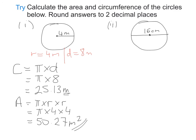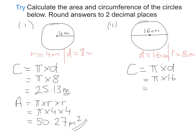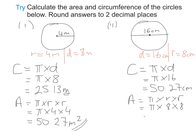For circle number two, the diameter equals 16, so the radius is 8. For the circumference: C = π × d = π × 16, which gives 50.27 centimetres. For the area: A = π × r × r, and since r = 8 centimetres, that gives 201.06 centimetres squared.